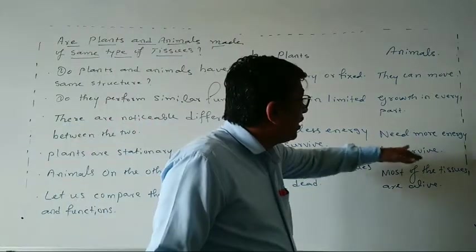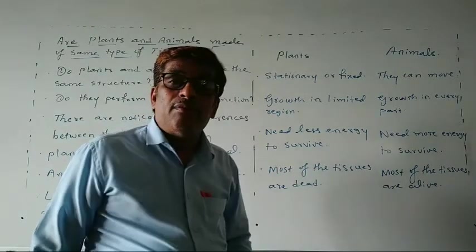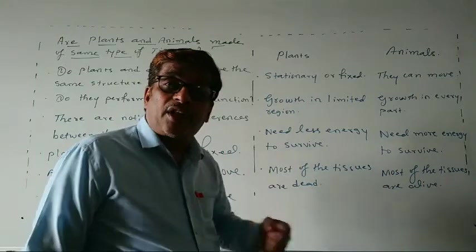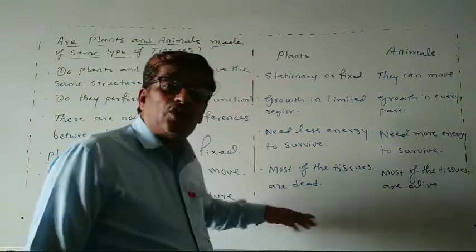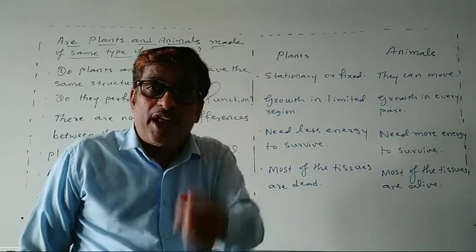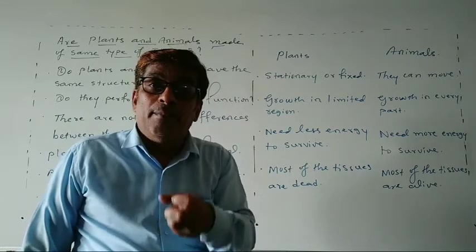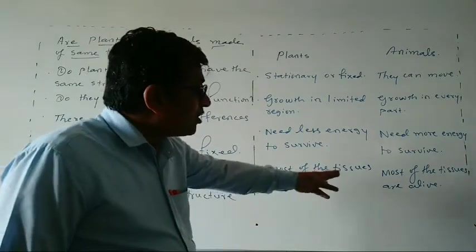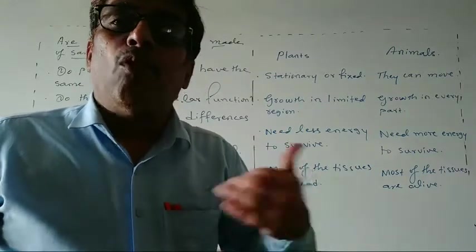Fourth point: most of the plant tissue cells are dead. So that is why plants have the mechanical strength to stand in one place — a fixed place — because for that, strong mechanical strength is required. But in animals, most of the tissues are alive — all are living — so that is why movement is possible.